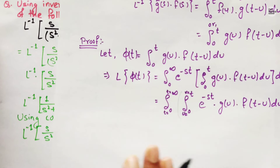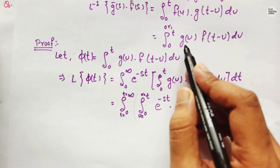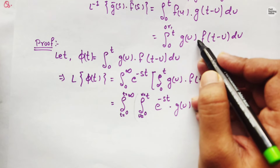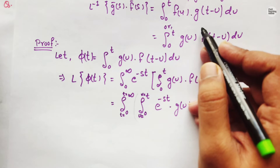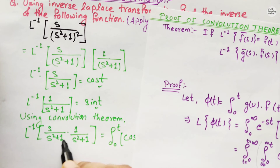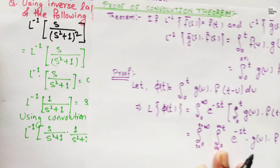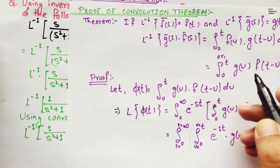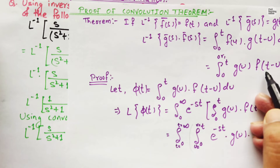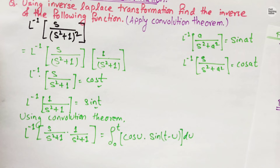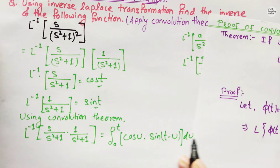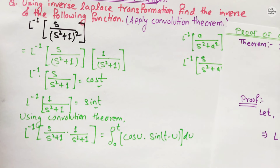We can apply either of the two forms from the theorem since we have two functions and can take either as g(u) or f(t − u). Here I have taken cos(u) as g(u) and sin(t − u) as f(t − u).